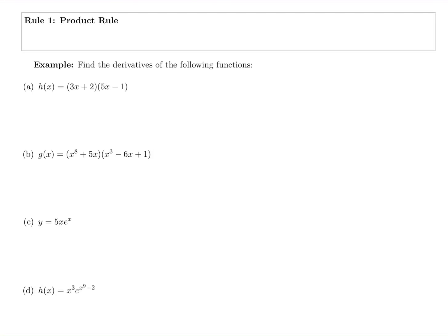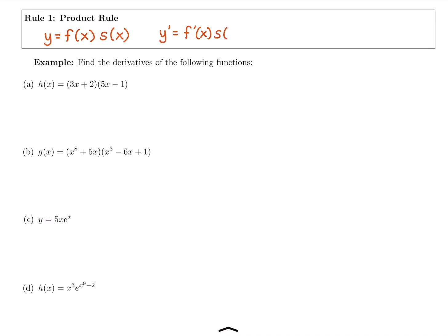We're going to look at the product rule for taking the derivative, one of our longer derivative rules. The product rule is used when we have a first factor with an x in it times a second factor with an x in it — two x terms multiplied together. To apply it: derivative of the first times the original second, plus derivative of the second times the original first. The product rule always has a plus.